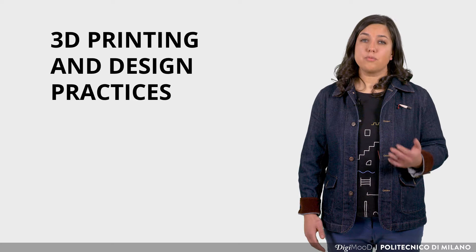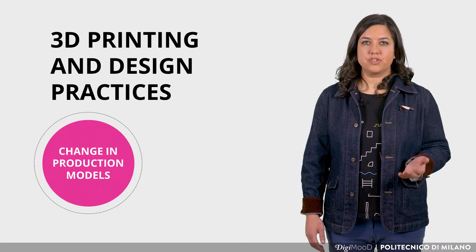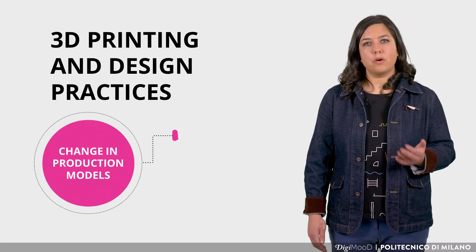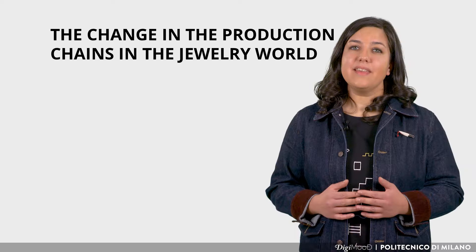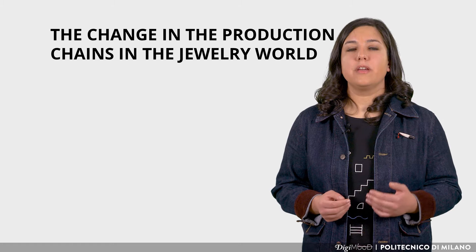This is a dialogic relationship of interchange, which is interesting and possible thanks to the change in production models — not only for the creation of products, objects, and accessories, but also for the new forms of production and distribution that are spreading. Linking this reflection to the fashion field, the change in production chains and the way of designing things are particularly evident looking at the jewellery world.